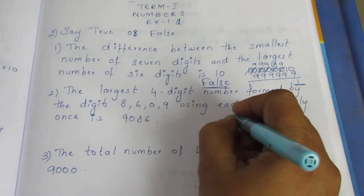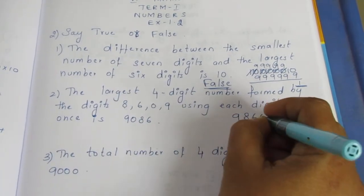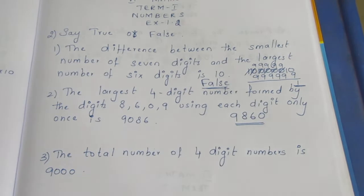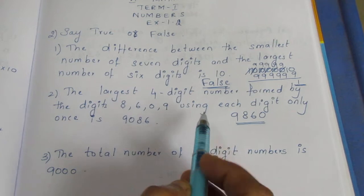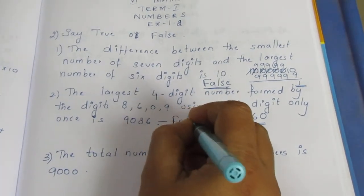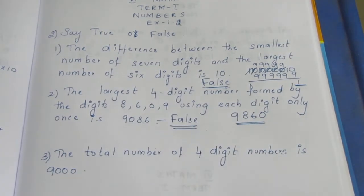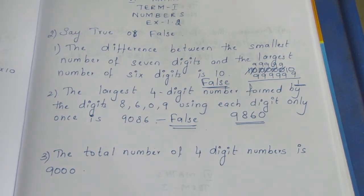The largest number uses 9 first, then 8, then 6, then 0, giving 9860. The given answer 9086 is smaller, so it's false. 9860 is the largest.